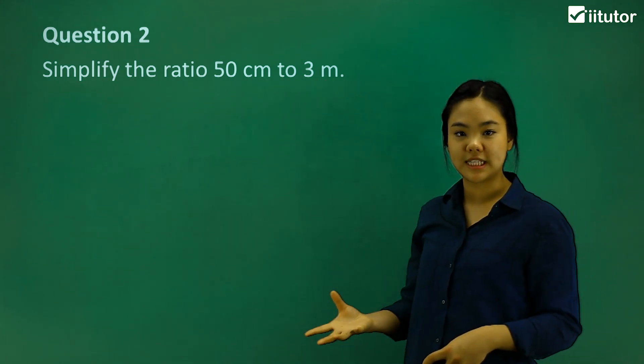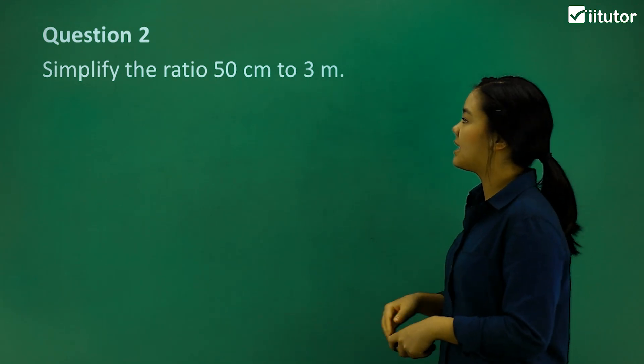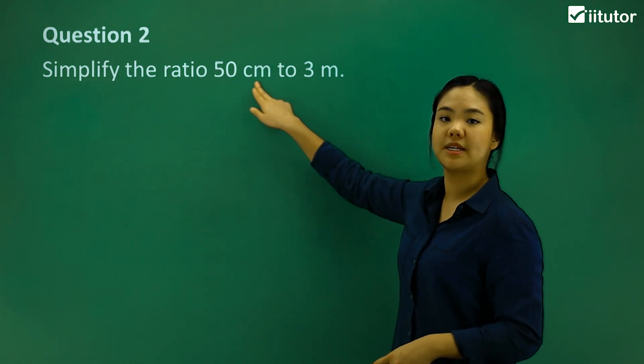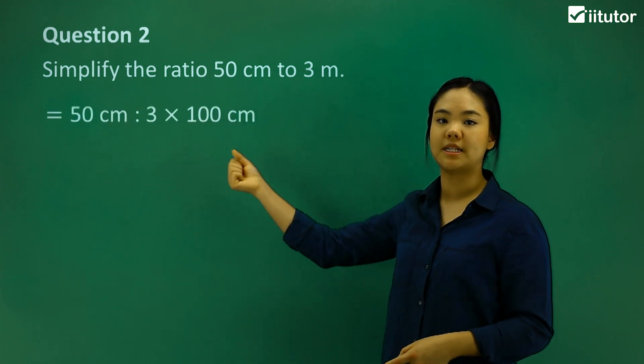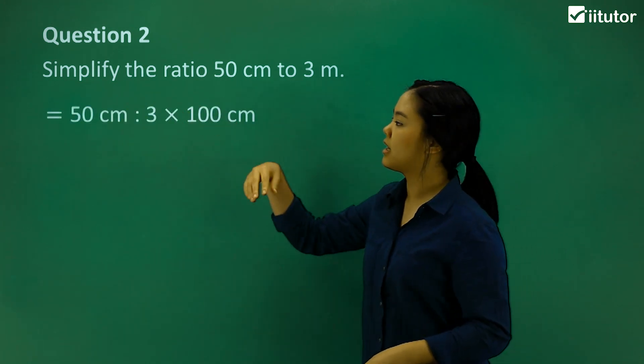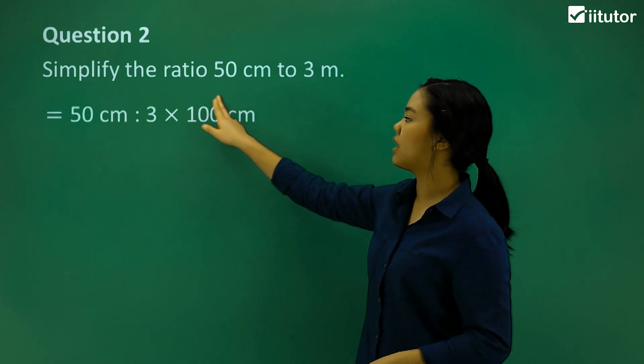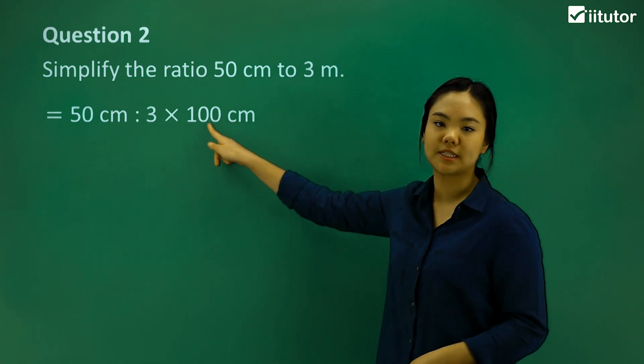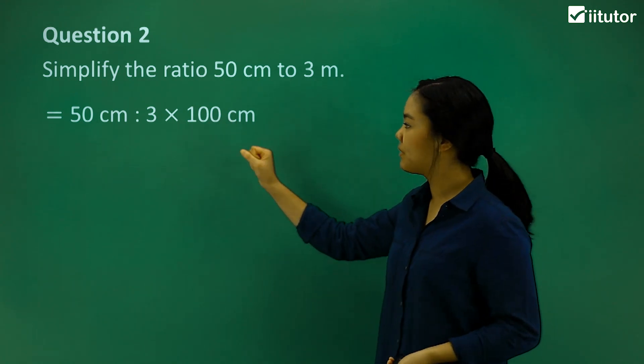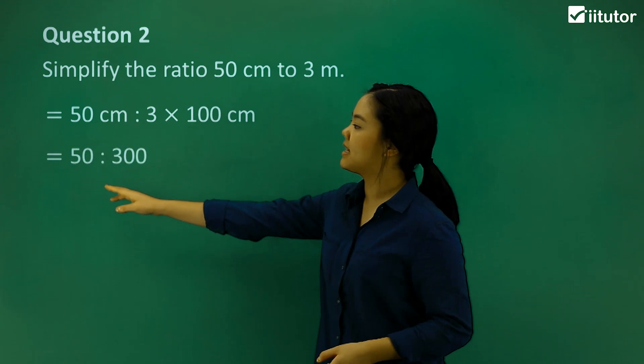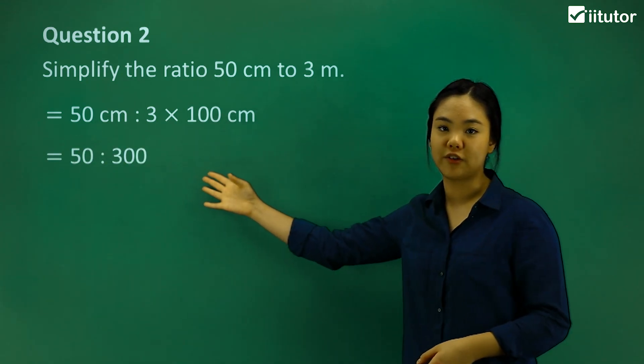Again, we want to get the same units, and it's better to change it to centimeters. So we can say 50 centimeters to 3 times 100 centimeters, because that makes up 1 meter. So then we can say that is 50 to 300. That's our ratio.